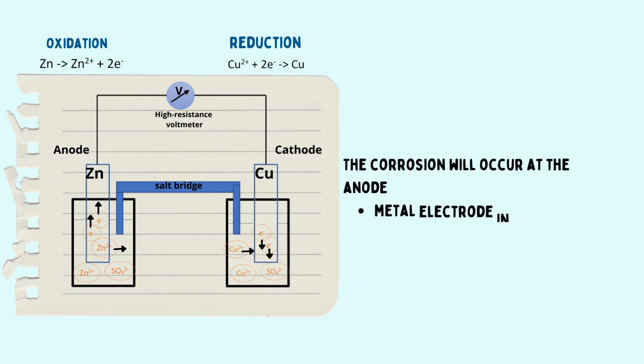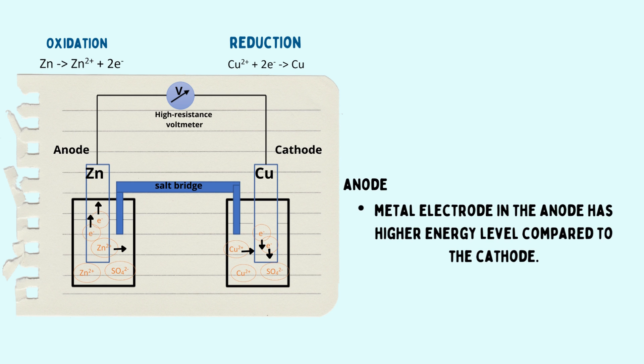The corrosion will occur at the anode, as the metal electrode in the anode has higher energy level compared to the cathode.